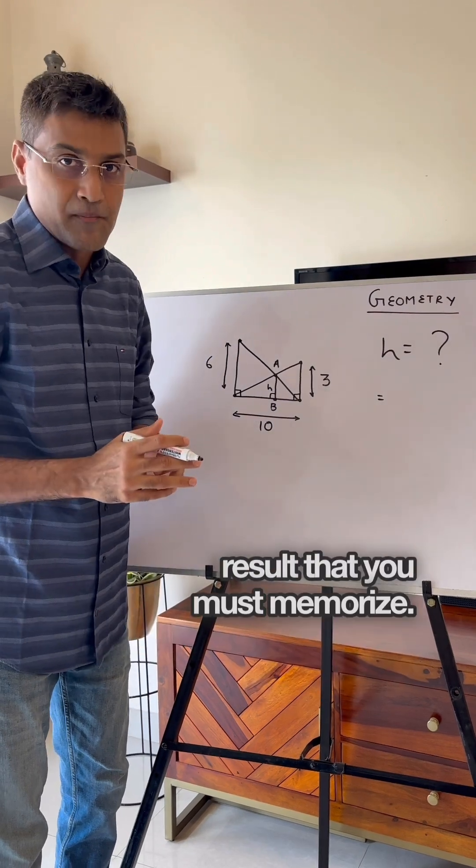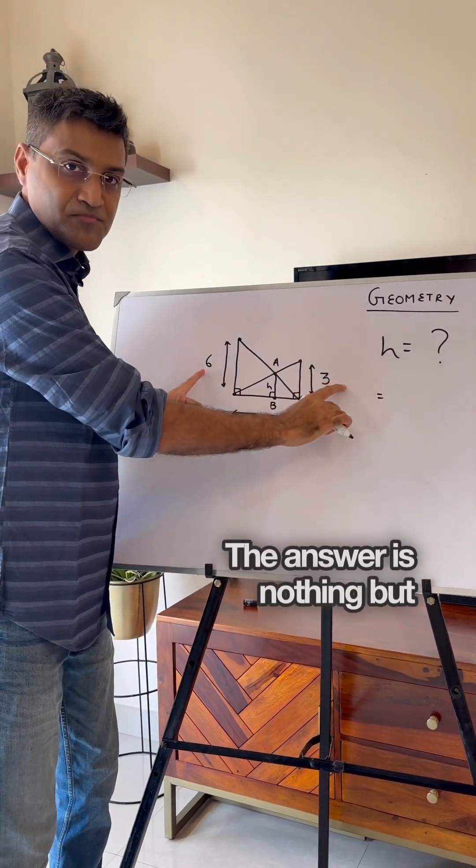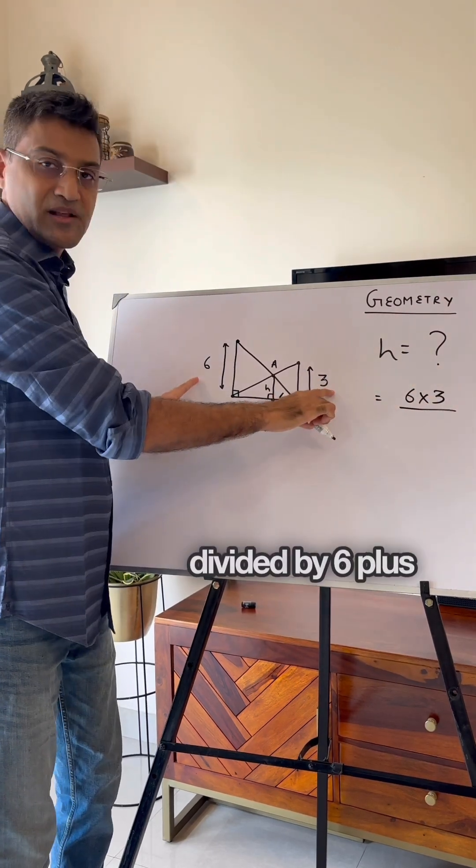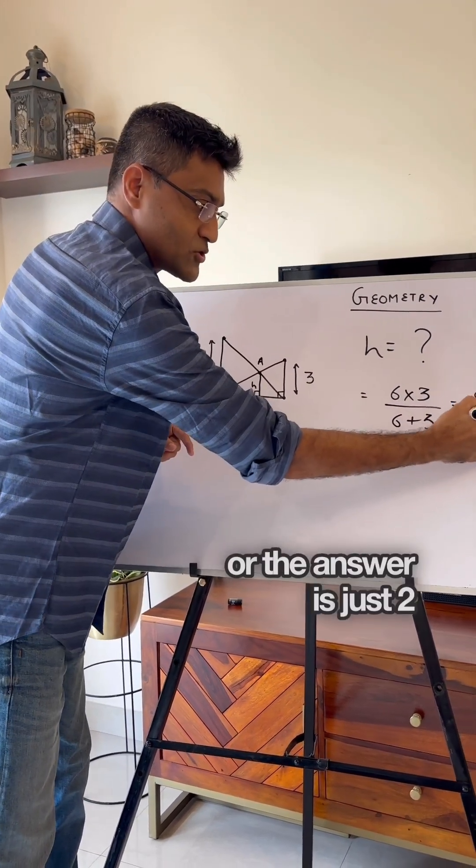But here's the result that you must memorize. The answer is nothing but 6 into 3, which is 18, divided by 6 plus 3, which is 9. Or the answer is just 2.